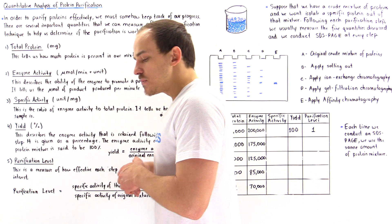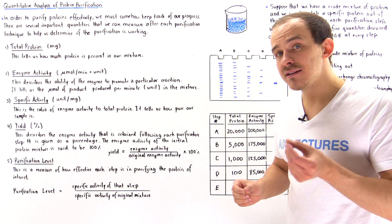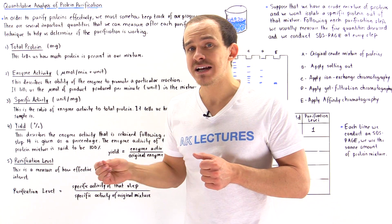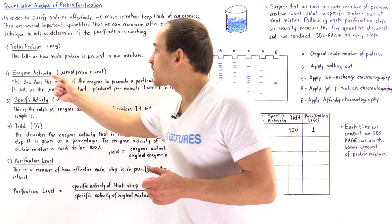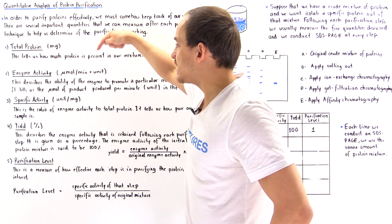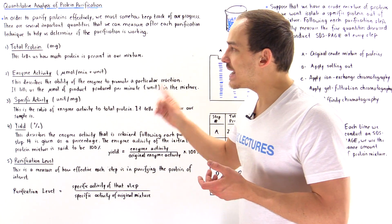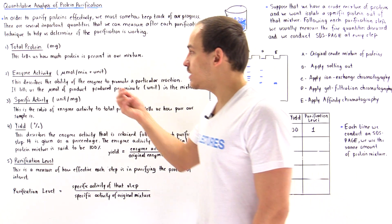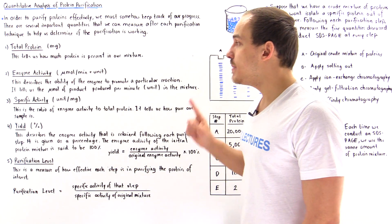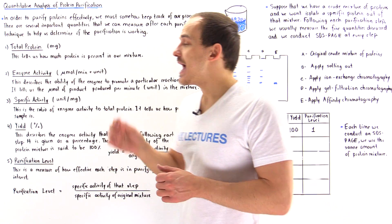What about enzyme activity? The enzyme activity tells us the ability of that enzyme to basically promote a specific type of reaction within that sample. The units are micromoles per minute — the classical units are micromoles per minute, which is equal to a unit — but nowadays we also use moles per second. So the enzyme activity tells us how many micromoles of product are produced by the enzyme per minute, or how many micromoles of substrate is transformed by that enzyme every single minute.